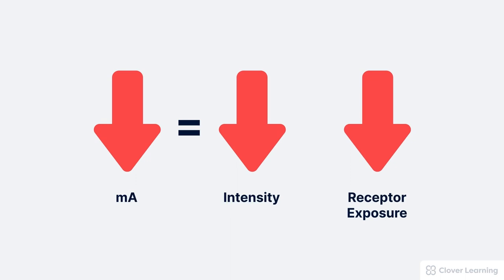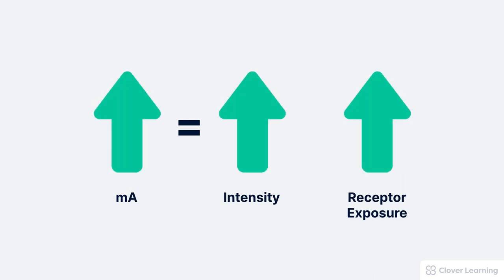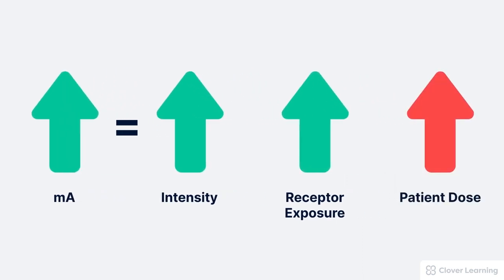Changes in MA also have the same simple relationship with patient dose. If the MA is increased, the patient dose will increase proportionally. That just means by the same factor. Of course, all of these relationships assume that only the MA is changing and all other factors remain the same.